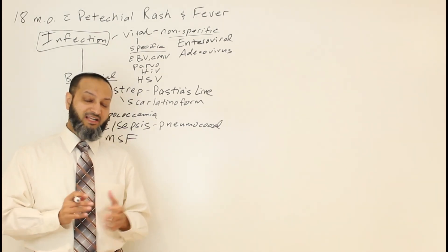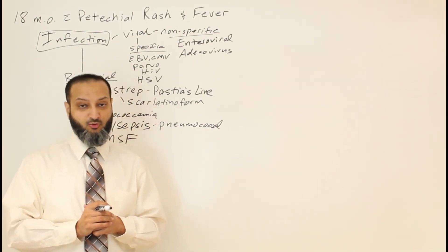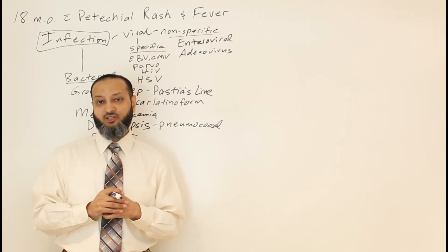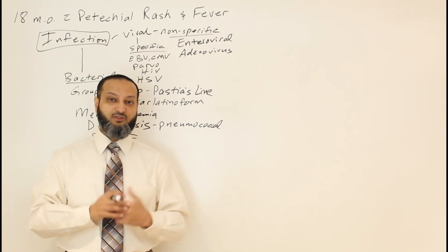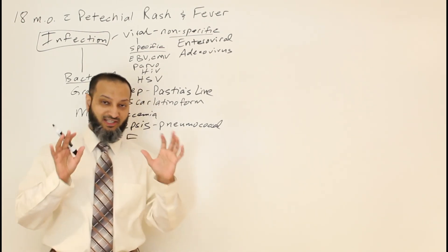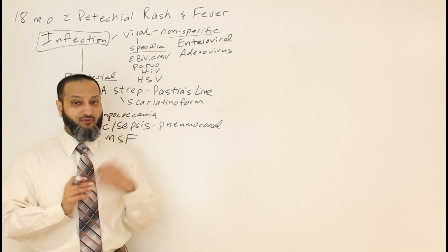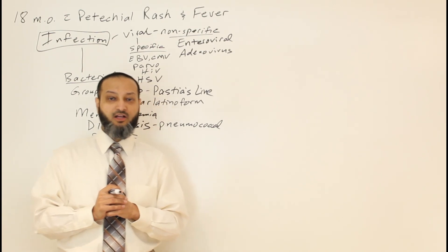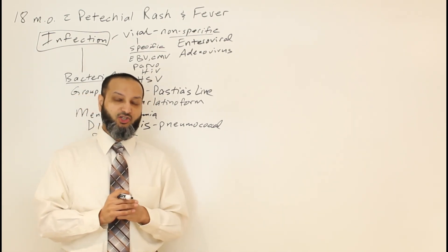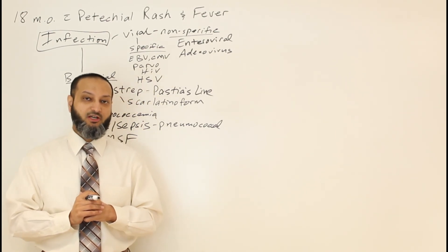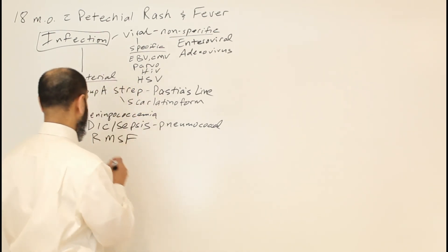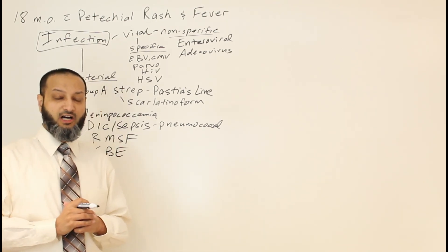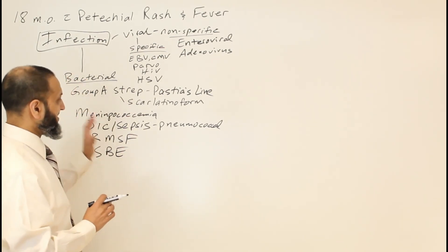Rocky Mountain spotted fever typically gives you the petechial rash initially on the periphery — palms and soles — then it travels more centrally, which is the opposite of most rashes that start centrally and spread peripherally. Always look at the hands and feet for petechiae. Enterovirus can also give rashes on hands and feet with hand-foot-mouth disease, so try to differentiate a benign enteroviral infection from the more ominous Rocky Mountain spotted fever. Another entity to always consider is subacute bacterial endocarditis, which is a possibility with petechial rash and fever.